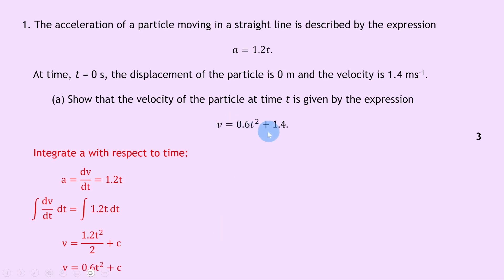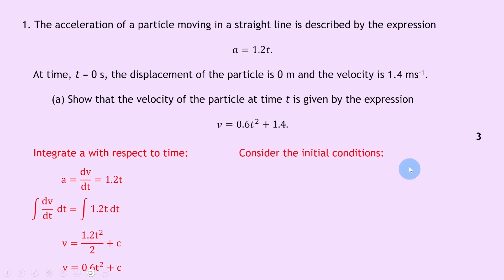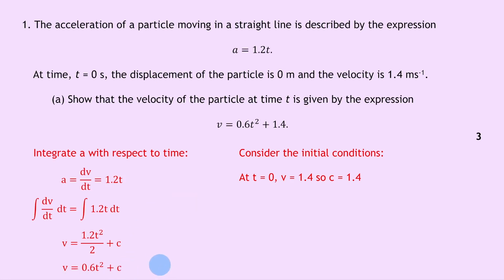We're close — we have v equals 0.6t squared plus c — but we need to show that c equals 1.4. To do that, we consider the initial conditions, meaning what happens at t equals 0. We were told that at t equals 0, displacement s equals 0 metres and velocity equals 1.4 m/s. Substituting t equals 0 into our expression gives 1.4 equals 0 plus c, so c equals 1.4. Therefore v equals 0.6t squared plus 1.4.